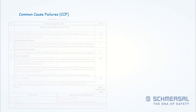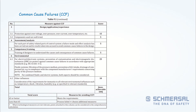It also looks at common cause failures, where the standard says let's look at your two-channel system. It will give you procedures — each procedure is given a score — and you have to select and implement enough procedures to get a score of 65 or more. Then you can claim that your safety function is resistant against a common cause failure.